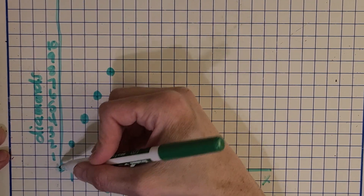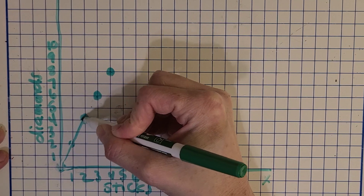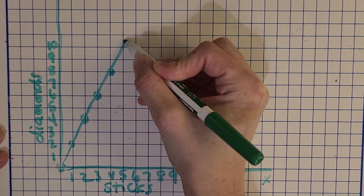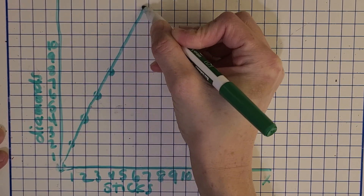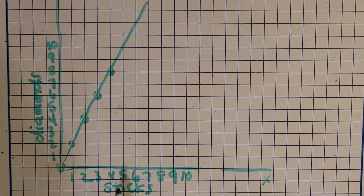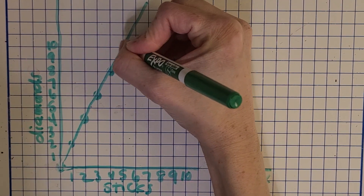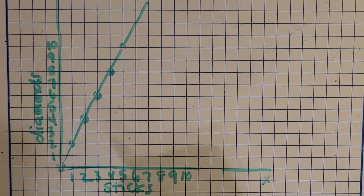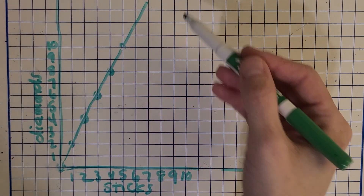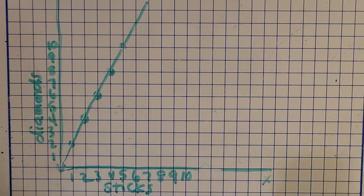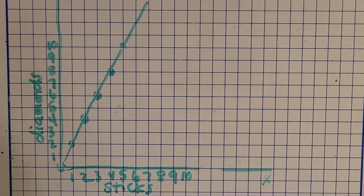Then we can just connect the dots. That's a really great way to keep a pattern going because I can start checking — five sticks, ten diamonds — and I can keep that going: six, seven, eight, nine. You could check the pattern going on further and further.